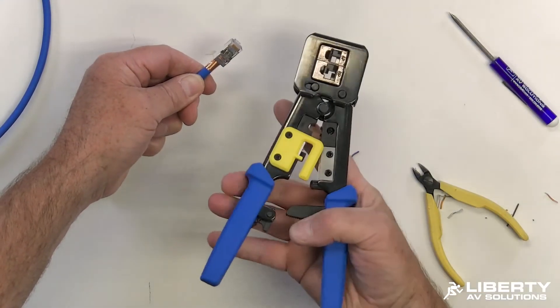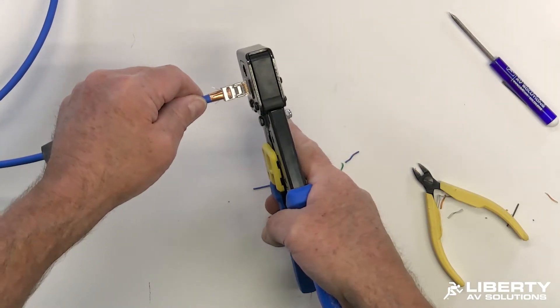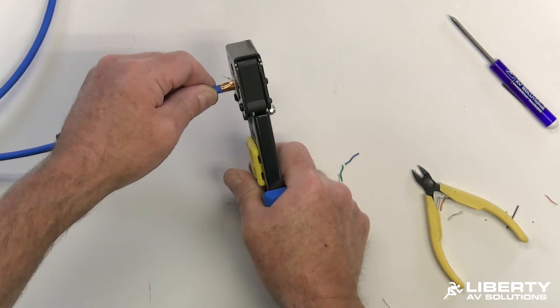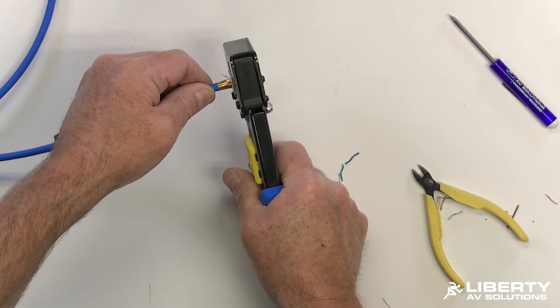So now I'm going to go ahead and take my crimp tool. Open it up. Slide the connector in fully seated. Make sure it's level and fully seated. Click and hold for a count of 1-1000. Then release.